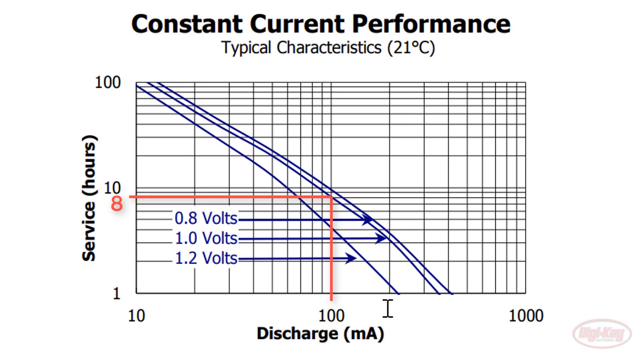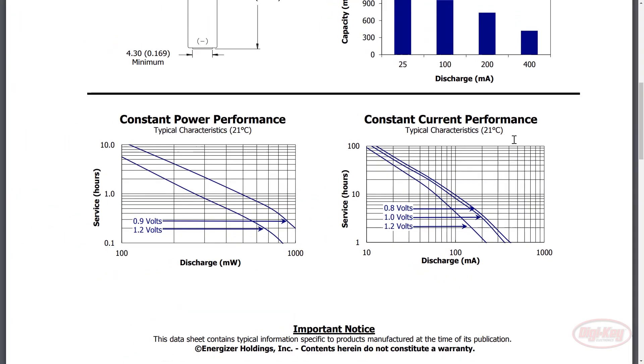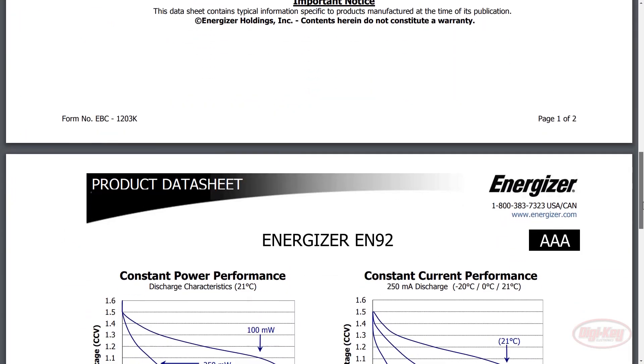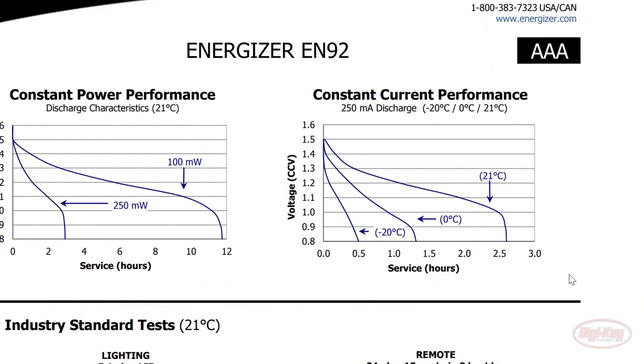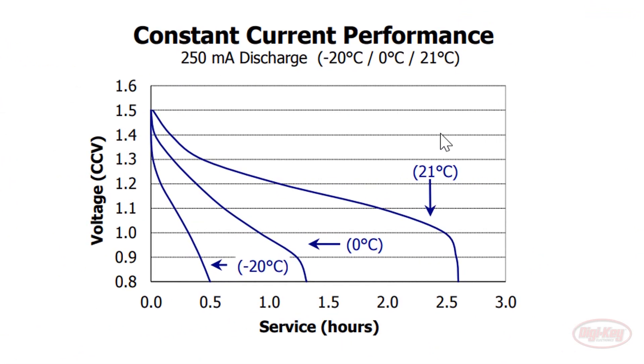This is a good deal less than the initial 11.4 hours we saw earlier, even taking into account that we are looking at batteries from different manufacturers. There's one more big factor to consider, and that's temperature. Our performance charts both show that the batteries were tested at 21 degrees Celsius. Below them, we can see that an alkaline battery's performance severely degrades as temperature decreases. For our purposes, we'll assume that our device will operate mostly indoors or in a similar environment.